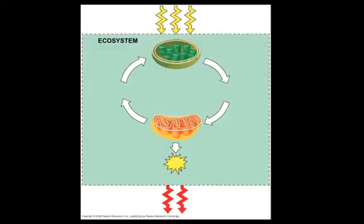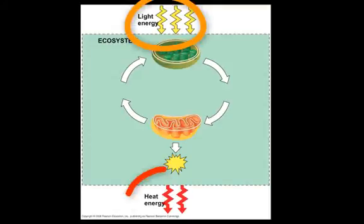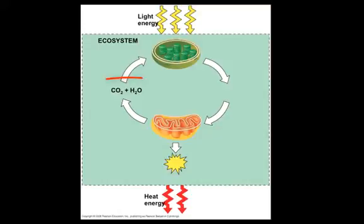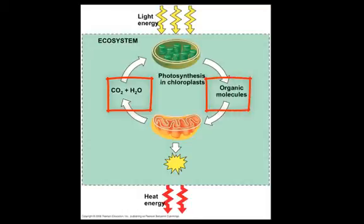The energy stored in organic molecules of food ultimately comes from the sun. Energy flows into the system as sunlight and ultimately leaves in the form of heat energy. In between the light and the heat, the energy is used to do the work of the cell, like converting inorganic compounds into organic polymers such as carbohydrates, lipids, proteins, and nucleic acids.